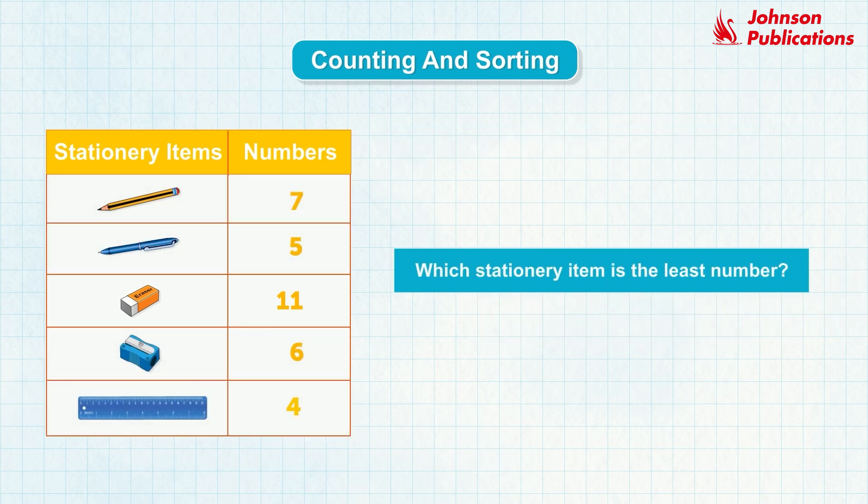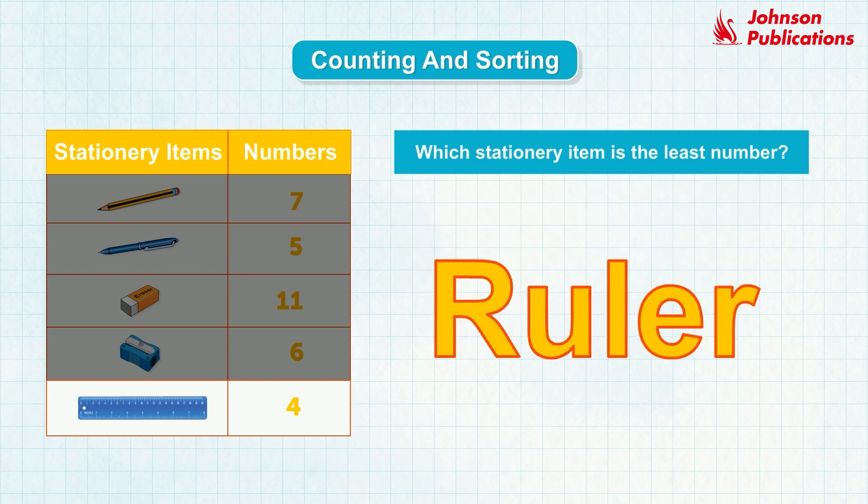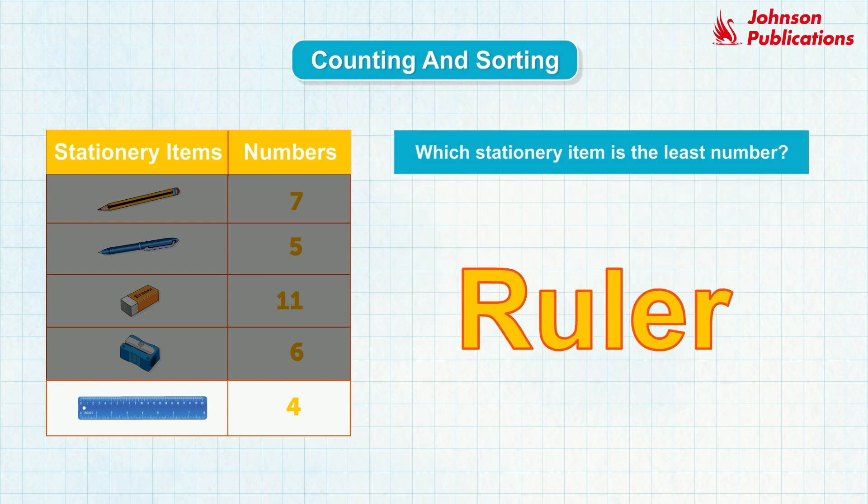Which stationary item is the least in number? By observing the table, we can see that there are only 4 rulers, which are the least in number. So the answer is rulers.